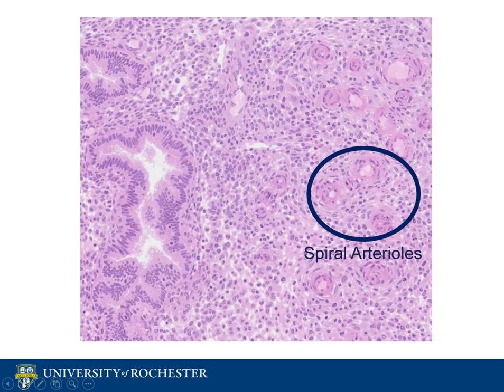In the secretory phase, the glands take on a corkscrew shape and actually fill with glycogen, and we also see changes in the stroma. To the right, you may notice these spiral-looking figures, which are actually called spiral arterioles. These small arteries supply blood to the endometrium and become much more prominent in the secretory phase.